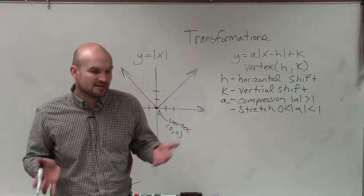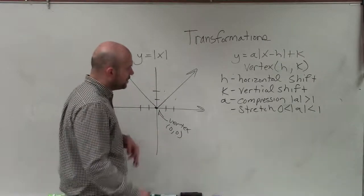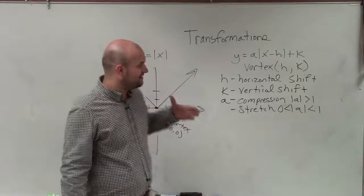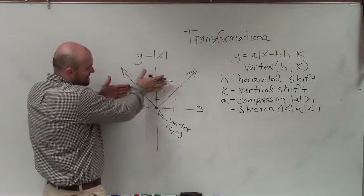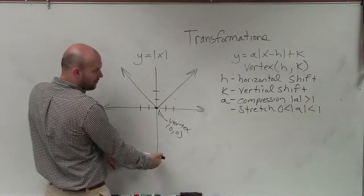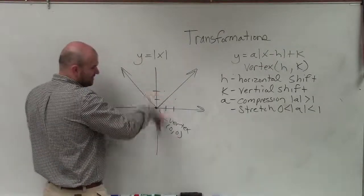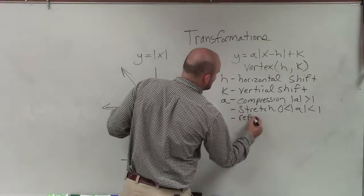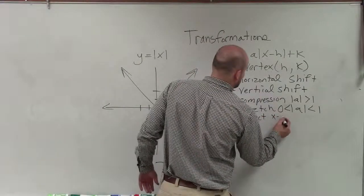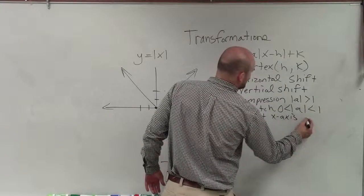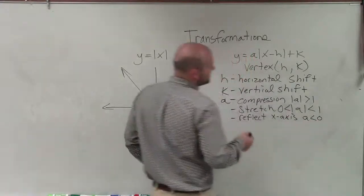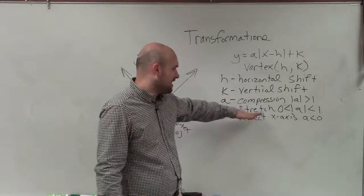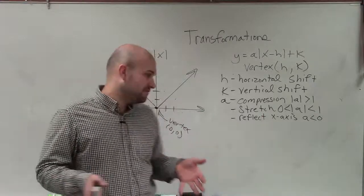What if a is less than 0? What if it's negative? If a is negative, then the graph is actually going to be reflected over the x-axis — it's going to open downwards. A can still be negative and you could still have a compression, or a can still be negative and you can still have a stretch. That's why we use the absolute value of a to determine compression or stretch.